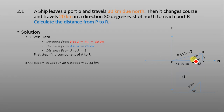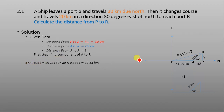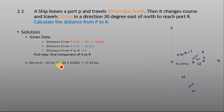First, we calculate the components of vector AR. The x-component is AR cosine theta, which is the projection of vector AR along the x-axis. AR is 20 kilometers and theta is 30 degrees, giving x = 17.32 kilometers.